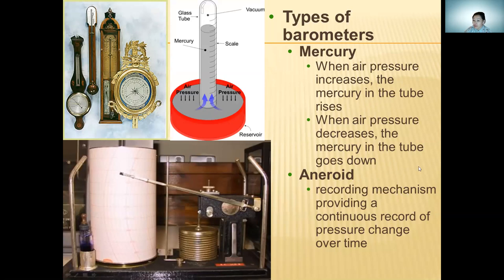And the aneroid, a recording mechanism providing a continuous record of pressure change over time. When air pressure increases, the mercury column rises, and vice versa.